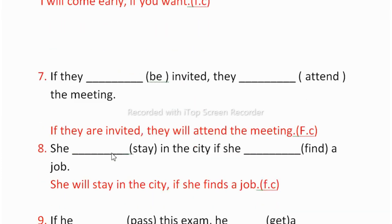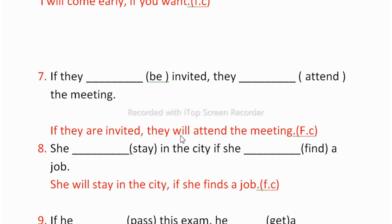The seventh one is: 'If they invited, they attend the meeting.' You have to add first conditional: 'If they are invited, they will attend the meeting' — if + simple present + simple future (will attend the meeting).